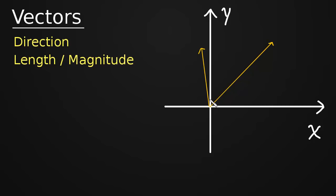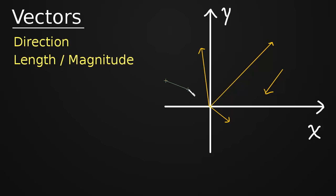This is also a vector. It's pointing in a certain direction and has a certain length, as is this. So is this — this is a vector. Even though it doesn't start at the origin, it's clearly pointing in a certain direction, so it has direction, and it clearly also has length. So vectors need not start at the origin; they can start anywhere. This is also a vector — it's pointing in a certain direction and has a certain length.